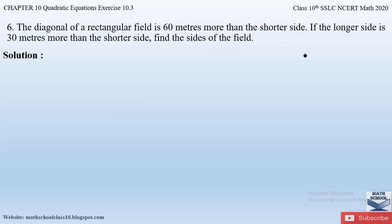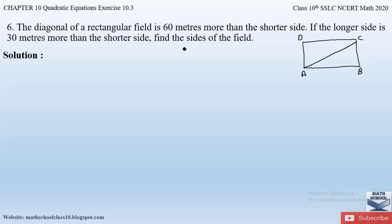They are saying that there is a rectangular field — let us name it as A, B, C and D. The diagonal of the rectangular field is 60 meters more than the shorter side. The two sides of a rectangle are longer and two sides are shorter. The longer side is 30 meters more than the shorter side, and the diagonal is 60 meters more than the shorter side. We have to find the sides of the field.